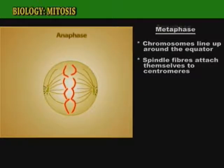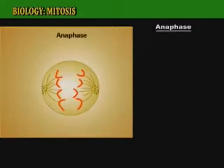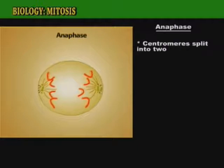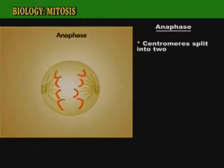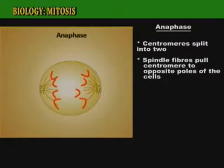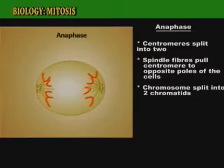The fourth stage of mitosis is called anaphase. At this stage, the centromere splits into two, and the spindle fibers pull the centromere to opposite ends of the cell. The chromosome is also split into two chromatids. The chromatids are pulled to opposite ends of the cell behind the centromere.